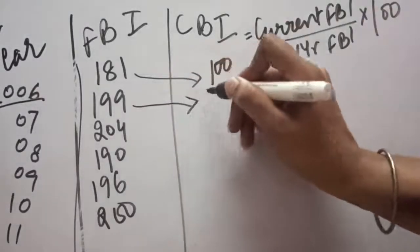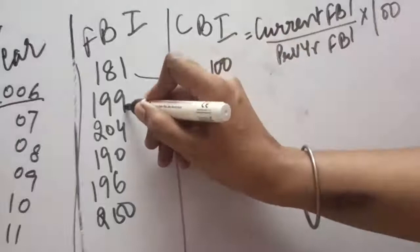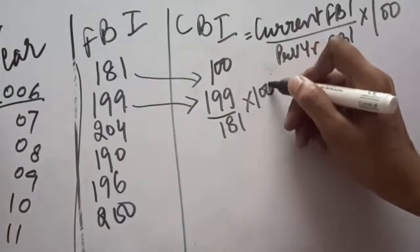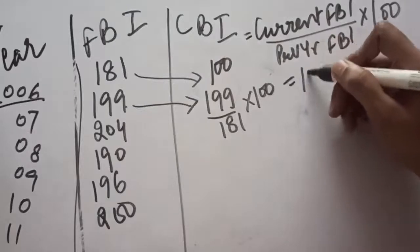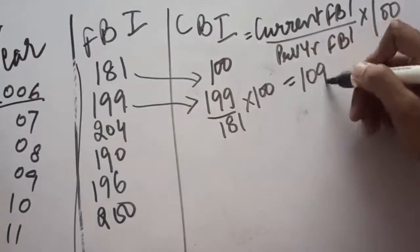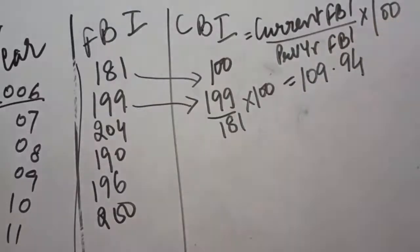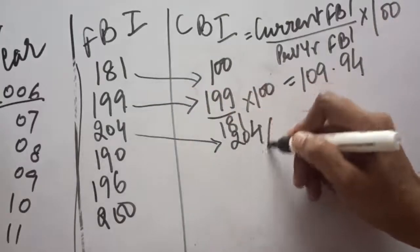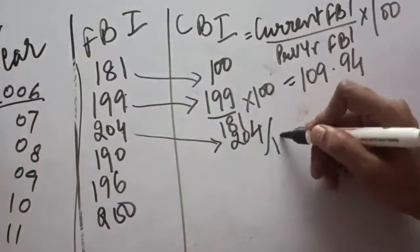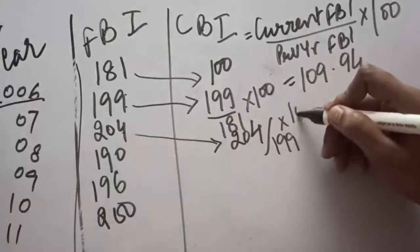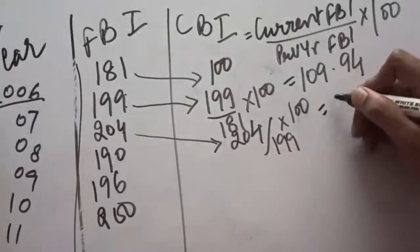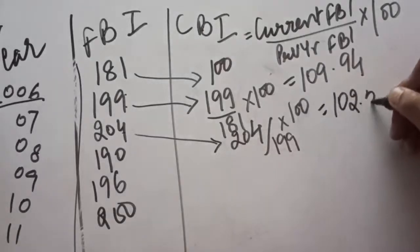For the second year, 199 is the current year FBI and 181 is the previous year FBI, multiplied by 100, so our answer is 109.94. For the third year, 204 divided by 199 into 100, it comes out to be 102.51.